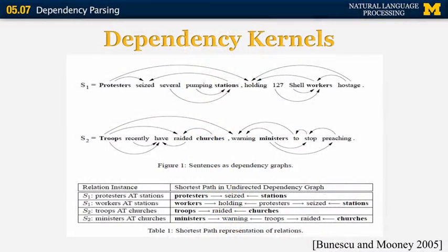Another application is the dependency kernel, which measures sentence similarity based on similarity of dependency structures. In Bunescu and Mooney 2005, the goal was to identify relations in sentences. For example, the relation 'protesters located at stations' has a shortest dependency path going from 'protesters' to 'cs' to 'stations.' These dependency path patterns can be used to identify how similar two sentences are in terms of the relations they express.